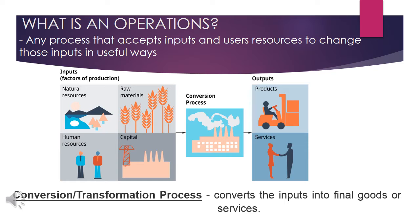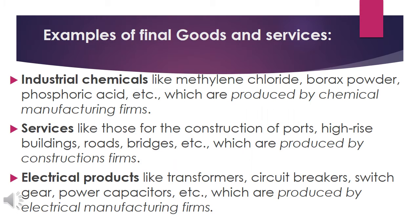Conversion or transformation process. This is the part where we convert the inputs into final goods or services. These are some good examples of final goods and services. The first one is industrial chemicals like methylene chloride, borax, phosphoric acid, etc.